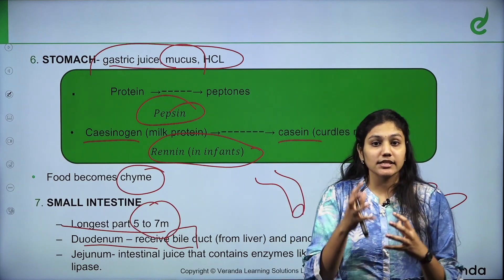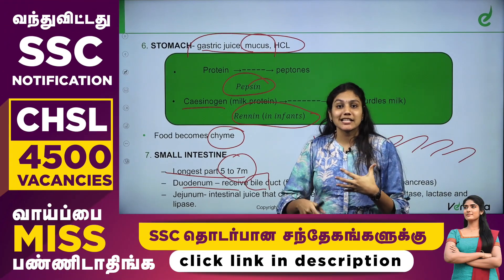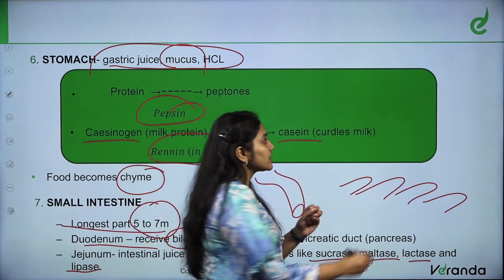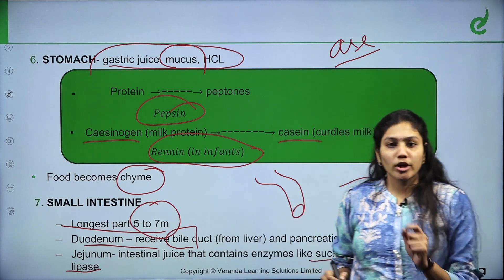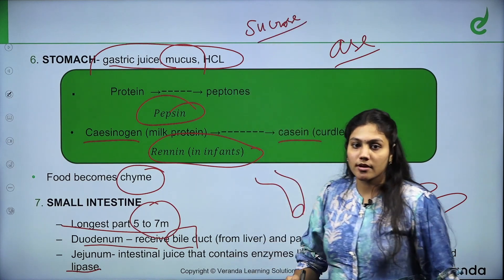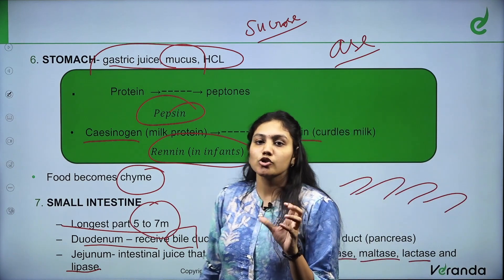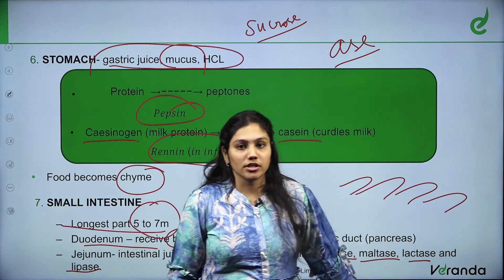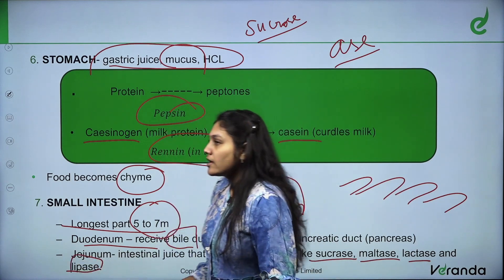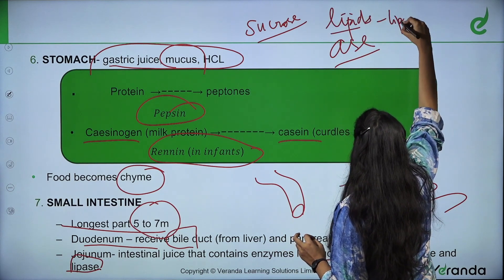The next stage is the duodenum, then jejunum — the next layer of the small intestine. In the jejunum, there are internal enzymes like sucrase, maltase, lactase, and lipase. These enzymes act on sugars: sucrose, maltose, lactose — carbohydrates — breaking them down. These are intestinal juices, which are essentially enzymes. Lipase is going to break down lipids.